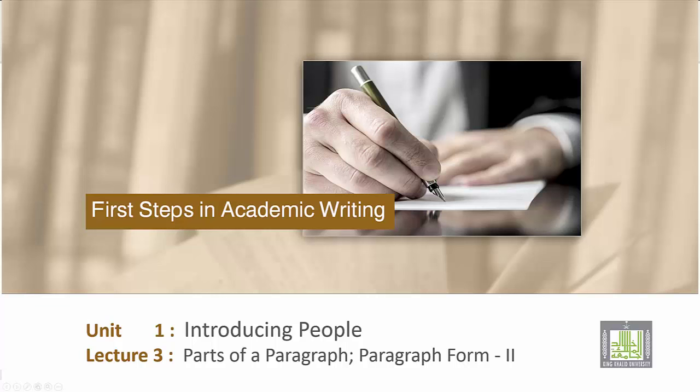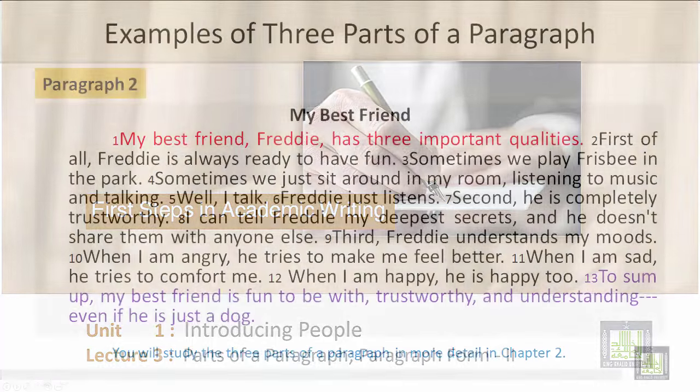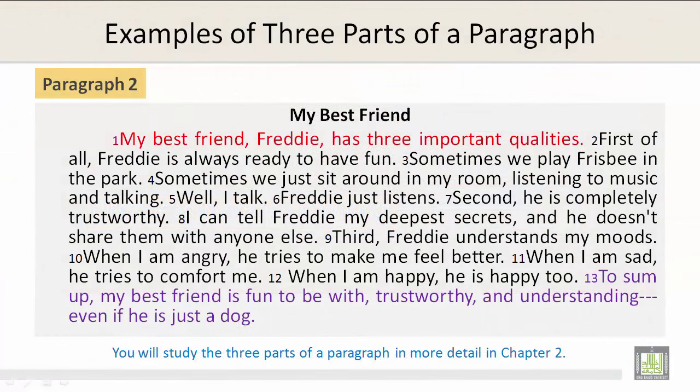Paragraph 2: My Best Friend. Paragraph 2 is 13 sentences long. Sentence number 1 is the topic sentence. Sentences 2 through 12 are the supporting sentences, and sentence 13 is the concluding sentence. I will read this for you. The topic sentence, sentence number 1: My best friend Freddy has three important qualities.